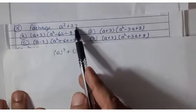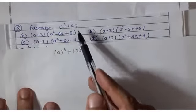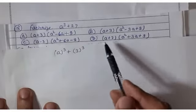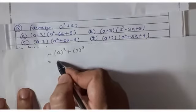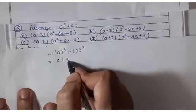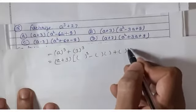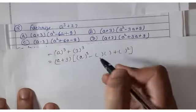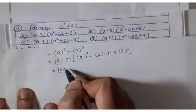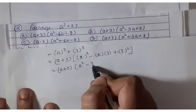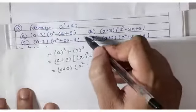Question 18: factorize a³ + 27. Write 27 as 3³, so this is in the form a³ + b³. Using the identity a³ + b³ = (a + b)(a² − ab + b²): with b = 3, the answer is (a + 3)(a² − 3a + 9). Option B.